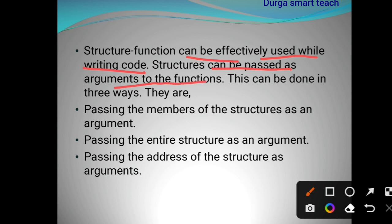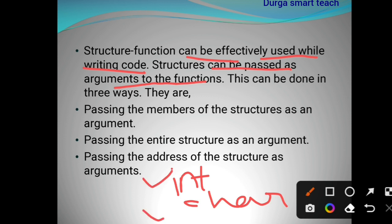Structures can be passed as arguments to functions. Structure is used to store different data types — that is int, char, float, and double. We can pass these structure members to the functions. We can pass different types of data types to the functions, and this can be done in three different ways.